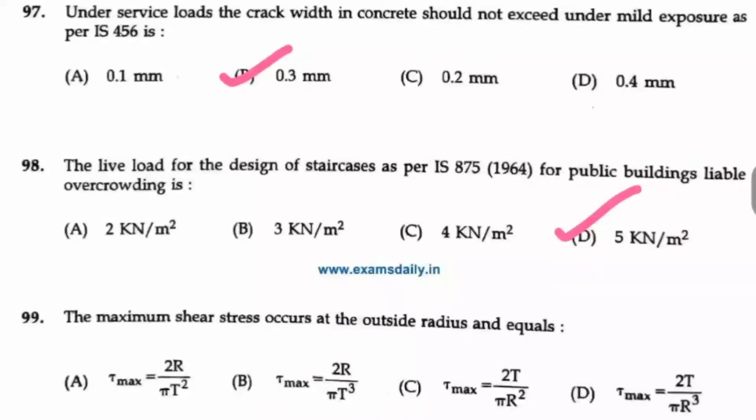Question number 99, the maximum shear stress occurs at the outside radius and equals 2T by pi r cubed. So option D is the right answer.